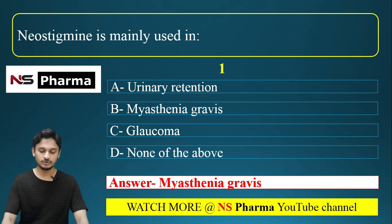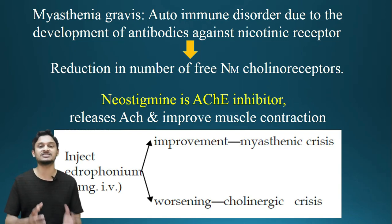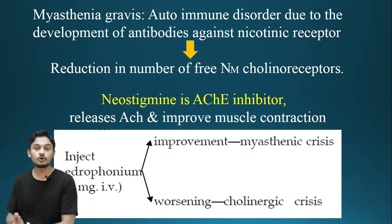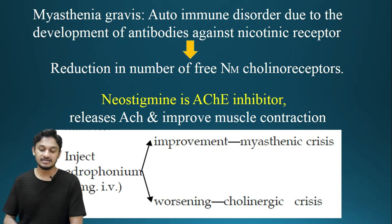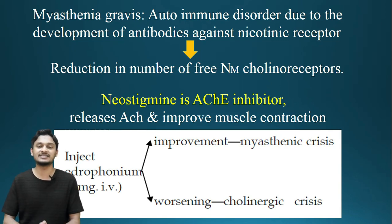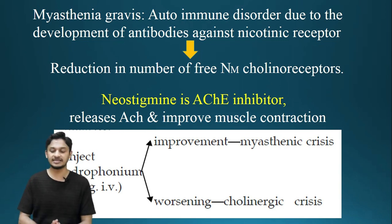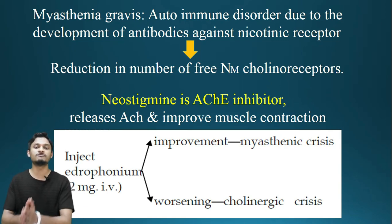Now we will discuss about this question. What is Myasthenia Gravis? Myasthenia Gravis is an autoimmune disorder due to the development of antibodies against nicotinic receptors, resulting in the reduction of the number of free NM cholinoreceptors. It is an autoimmune disorder.